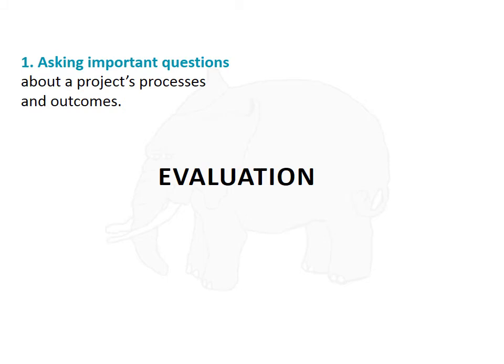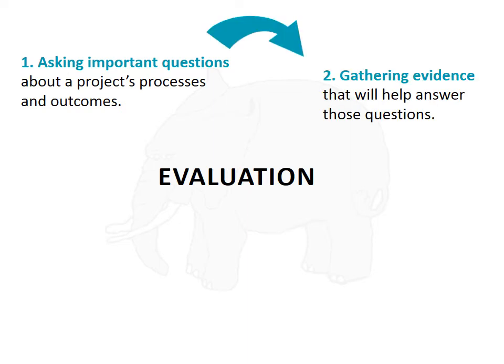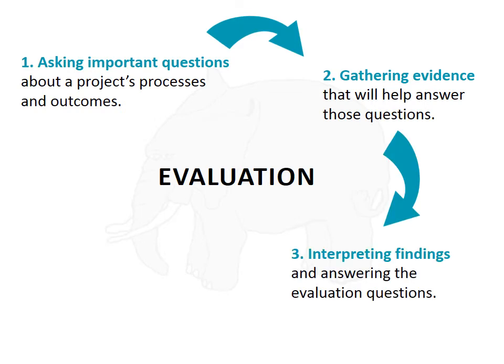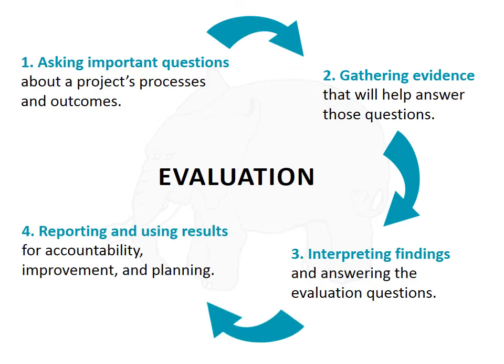Boiled down, evaluation involves four main steps. The first involves asking important questions about a project's processes, outcomes, or other dimensions — making sure the evaluation focuses on the things that really matter. The next step is gathering evidence that will help answer those questions. Then we have to make sense of those data, so we interpret the results and answer the evaluation questions. The last step is to use the information for accountability, improvement, and planning. But it's not really a final step, because the evaluation should also inform decisions about the next project.